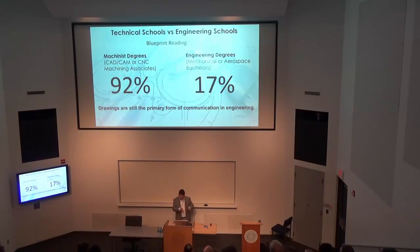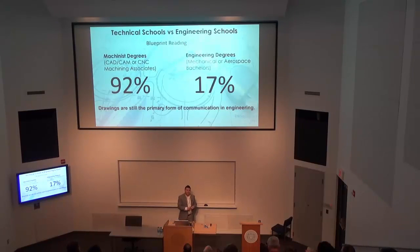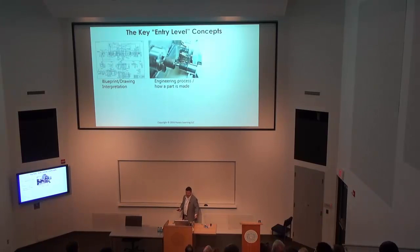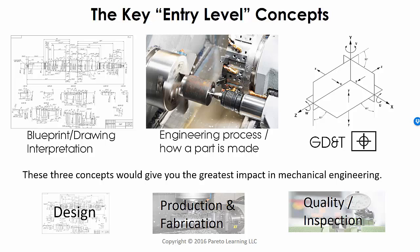There are electives and manufacturing directions you can go into, and I think that's great. But drawings are still the primary form of communication in engineering. Even as 3D modeling becomes the future, you still need fundamental concepts that come from blueprint reading, and still need a way to view everything in a nice consolidated view. We focus on three key entry-level concepts: blueprint reading and drawing interpretation, engineering process and the basics of how a part is made, and GD&T basics. These three concepts would give you the greatest impact in mechanical engineering — it's the missing link, whether you go into design, manufacturing, or quality.